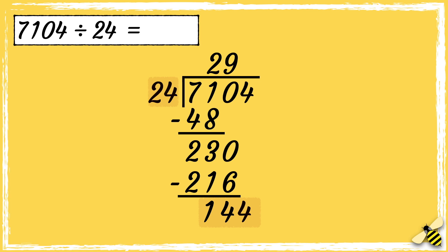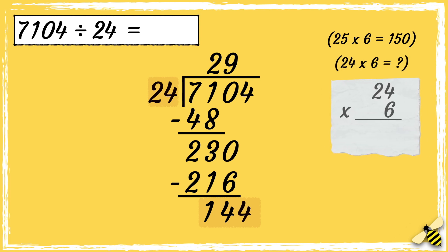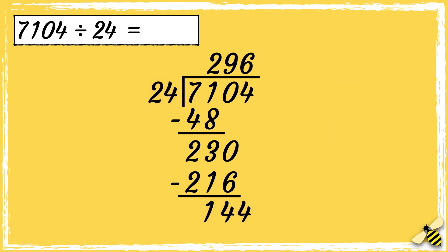I don't know this from the top of my head, so I'm going to do some estimating. I know that 25 times 6 is 150, so I'm going to try 24 times 6. 24 times 6 is 144, so I know that 24 goes into 144 six times. So the answer is 296.